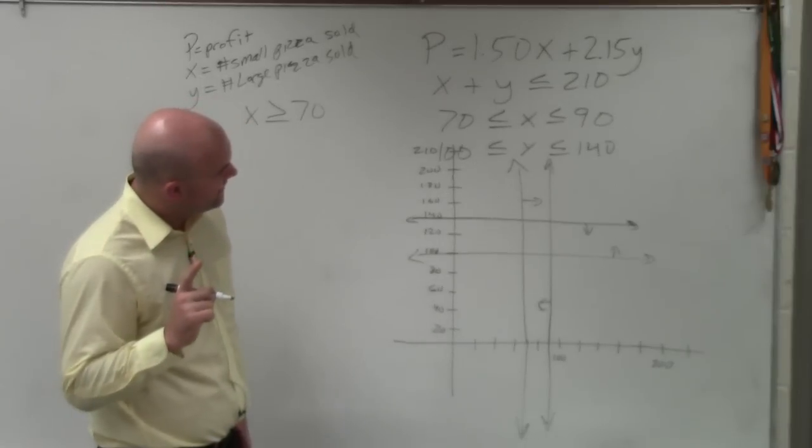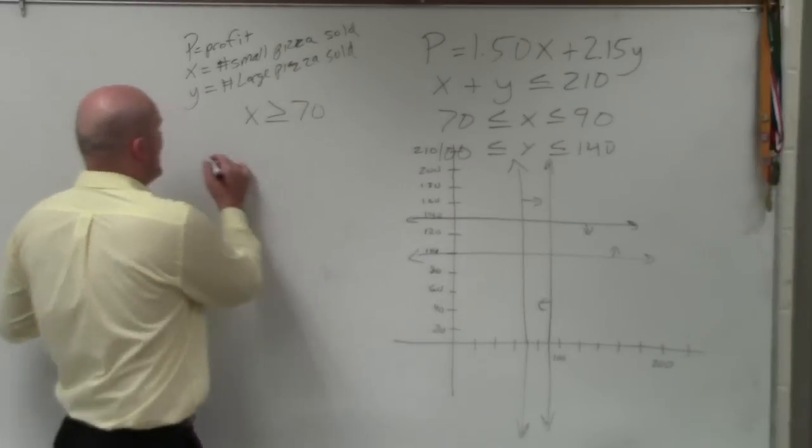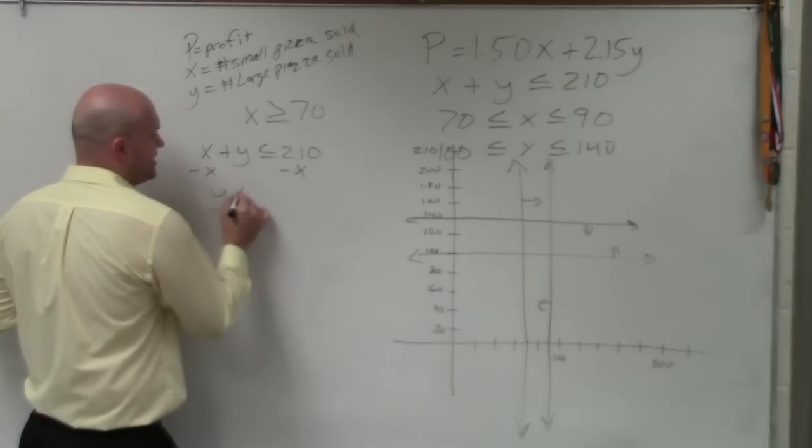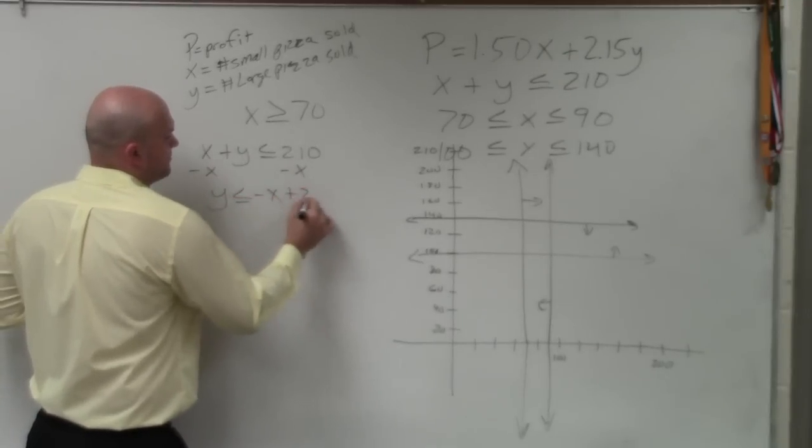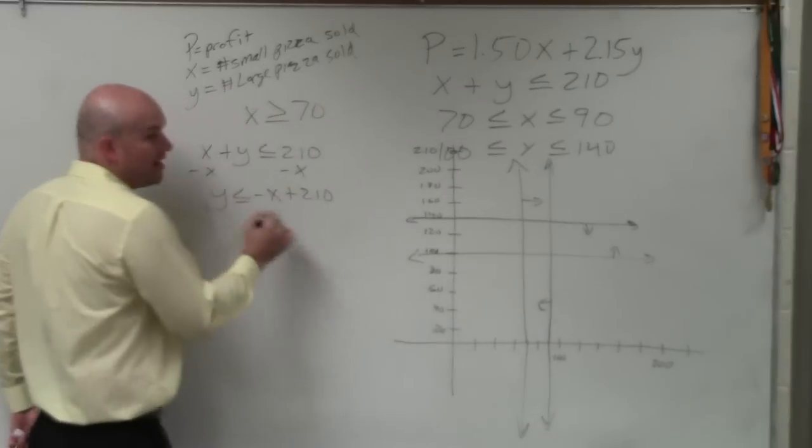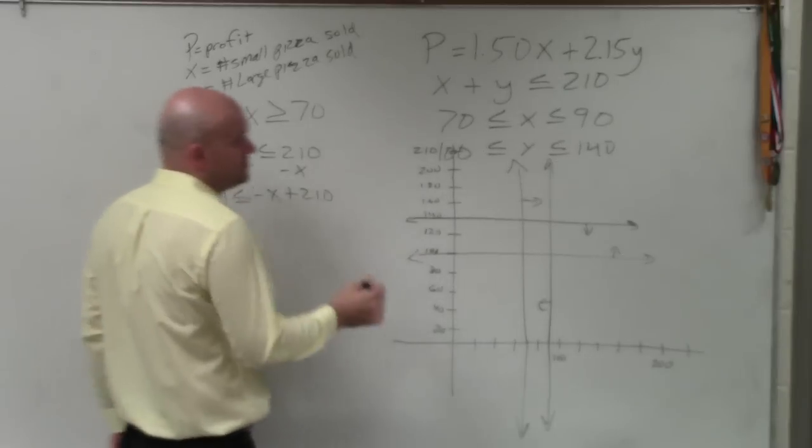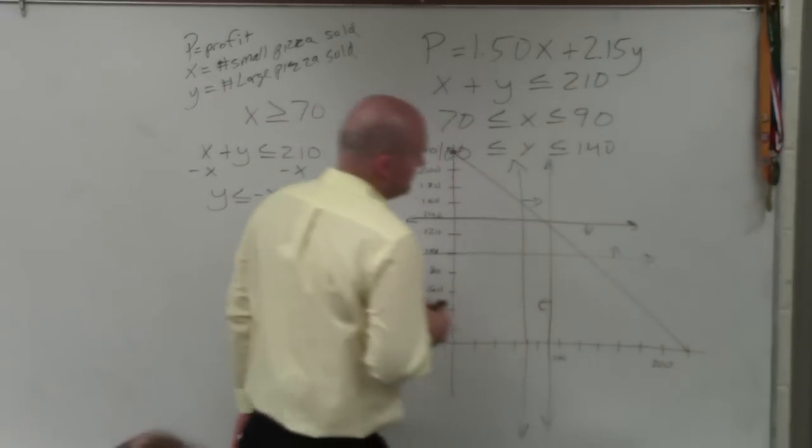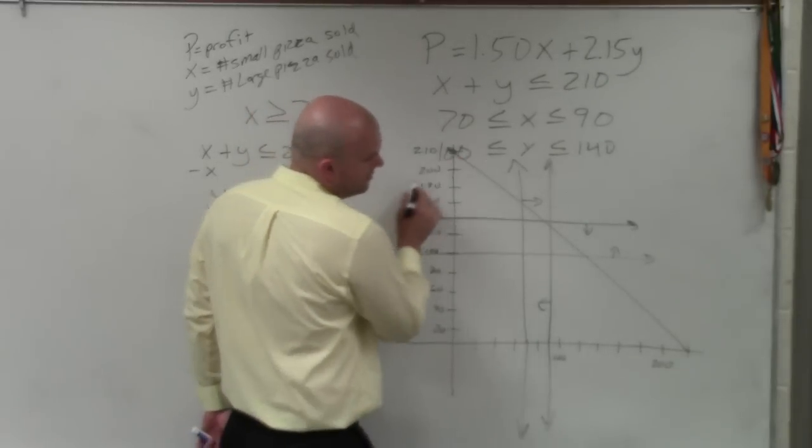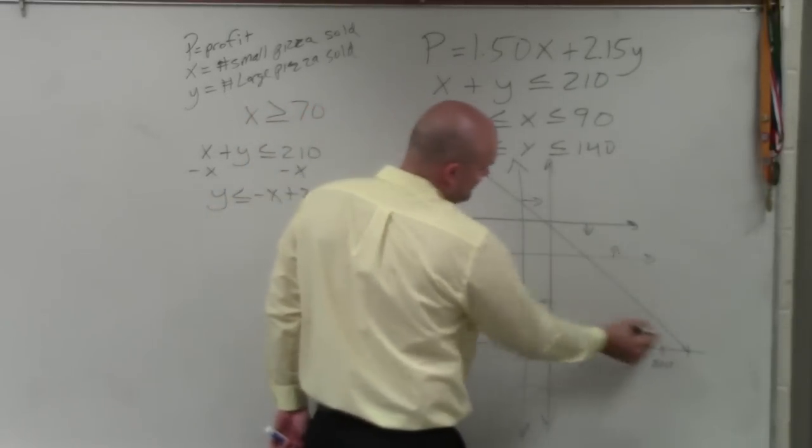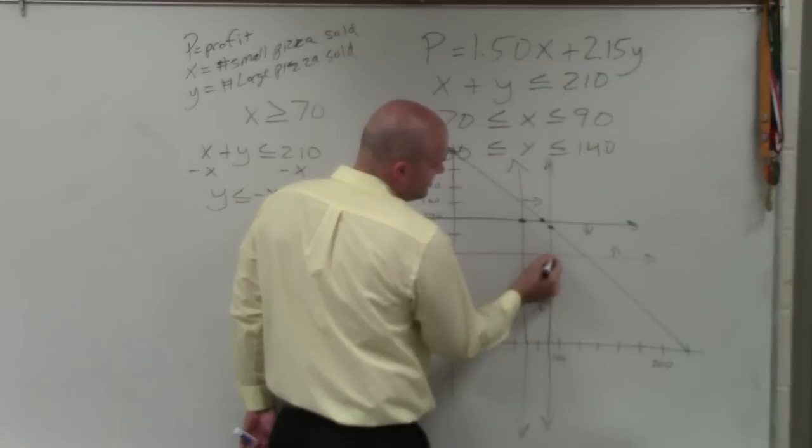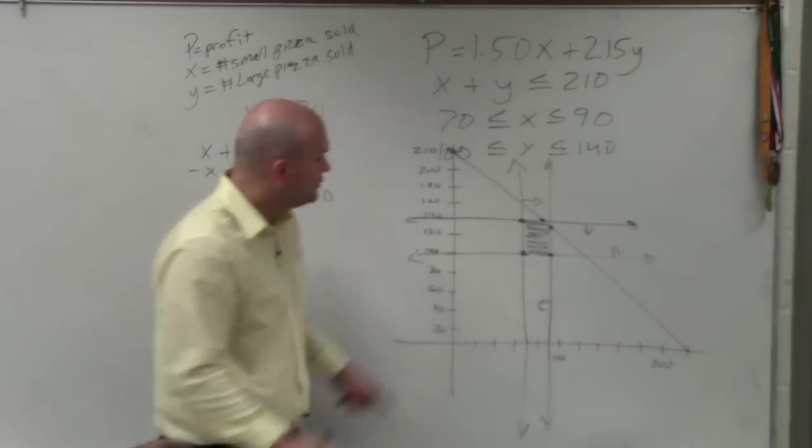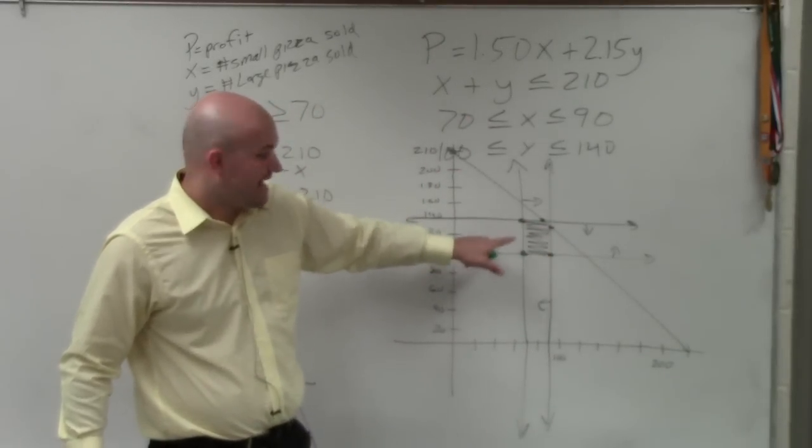And then, the last one is x plus y has to be less than or equal to 210. Well, if you solve for y, I'm sorry, that's going to be down 1 over 1. If you keep on going down 1 over 1 starting at 210, let's just say that's my values there. So, therefore, you have these points are going to fill in your feasible region. Then, you determine what all these vertices are. That's going to maximize your profit.